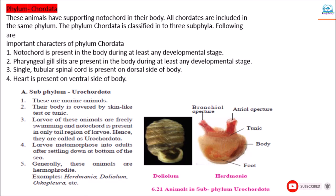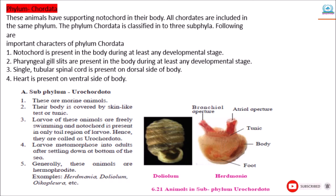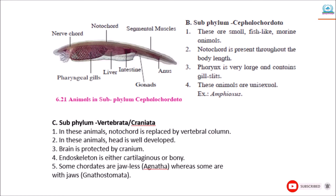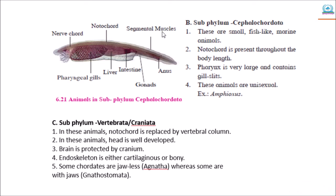Larvae metamorphose into adults after settling down at the bottom of the sea. Generally, these animals are hermaphrodites. The next subphylum is Cephalochordata. These animals are small, fish-like marine animals. Notochord is present throughout the body length. The pharynx is very large and contains gill slits. In the diagram you can see the large pharyngeal region containing gill slits. These animals are unisexual, and the example is Amphioxus.